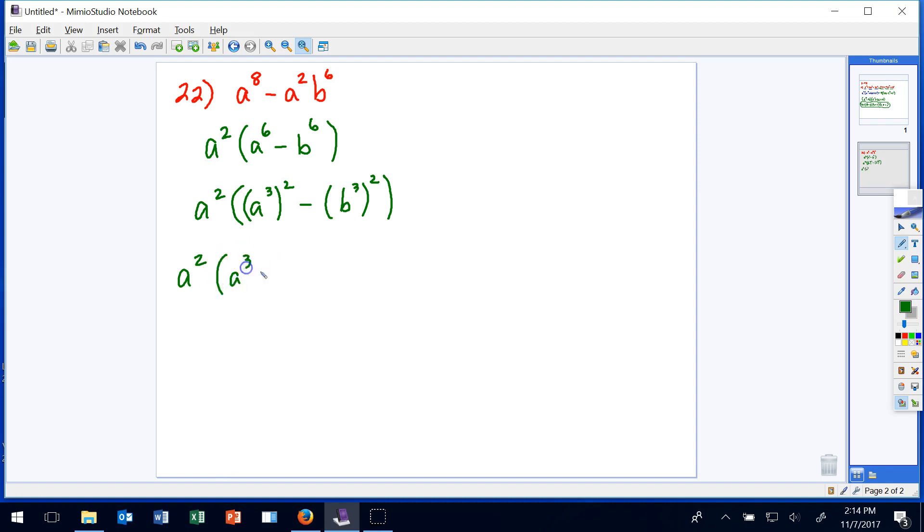And what that does for me is the difference between two squares factors as a cubed plus b cubed times a cubed minus b cubed. That's just like if I were factoring these two perfect squares, I would do the square root of each one plus and one minus in each group. And that's what I did here. The square root of a cubed squared is just a cubed. So hopefully this makes more sense.